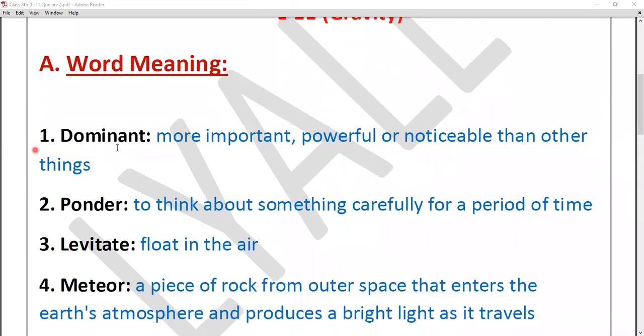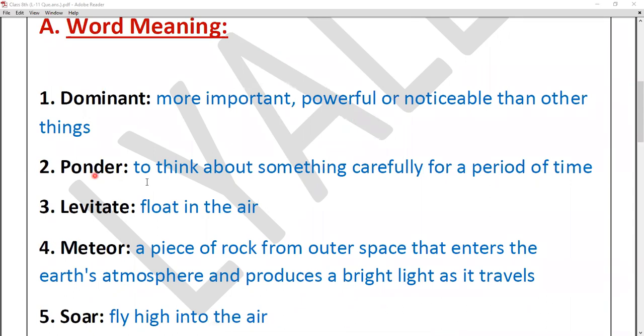Very first word meaning of this chapter is Dominant, which means more important, powerful or noticeable than other things. Next is Ponder, which means to think about something carefully for a period of time. Next is Levitate, which means float in the air.